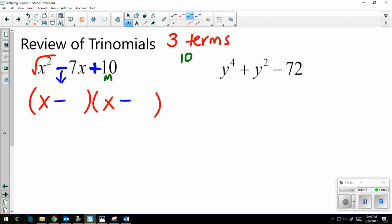So now I want to know what multiplies to 10. So I'm going to list out my factors of 10. 1 times 10, or 2 times 5. I want them to somehow add or subtract to give me 7.